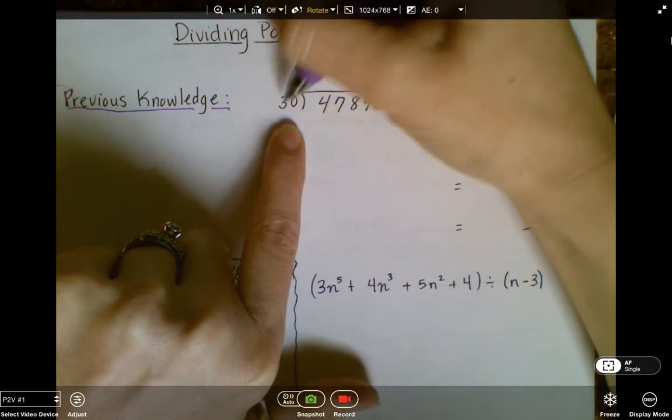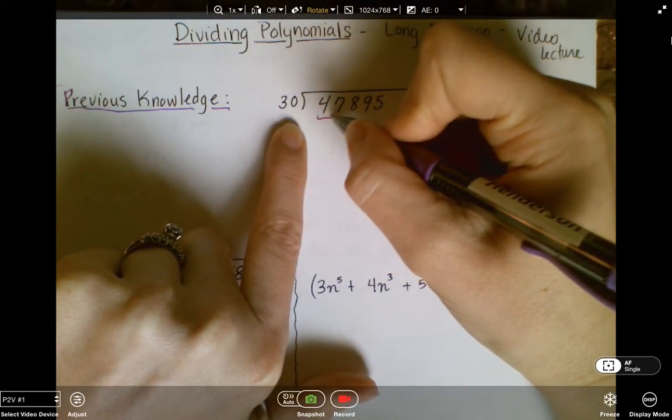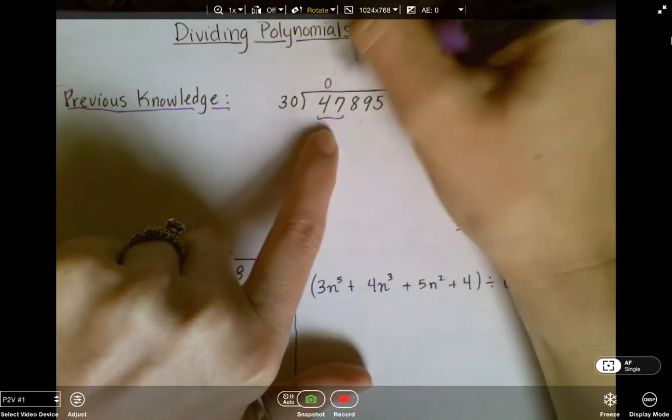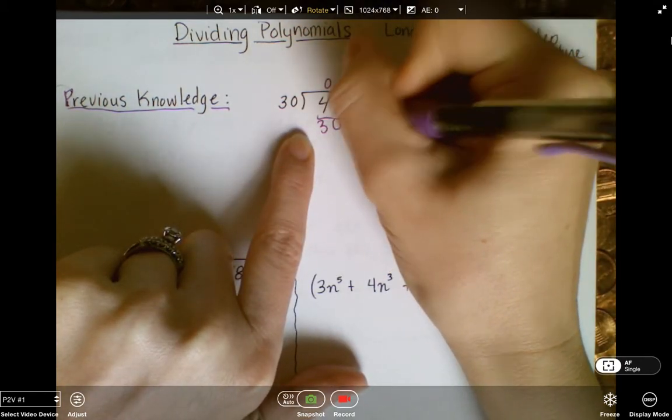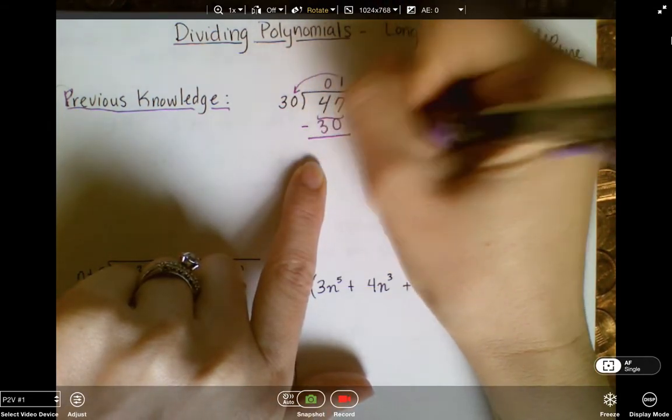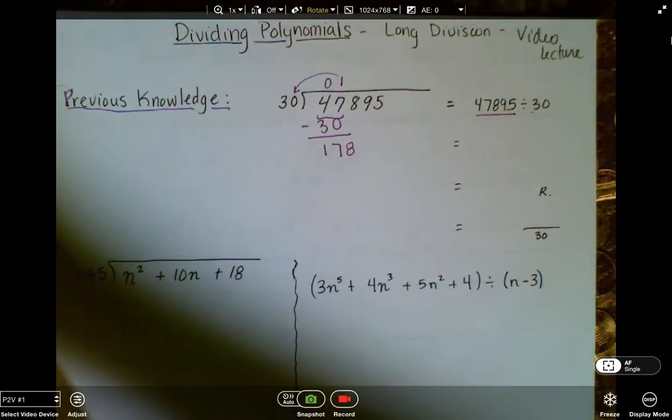So the first thing I'm going to do is take 30 and see how many times it goes into the first possible term. So here it goes into 4 zero times, and 47 once. And then 1 times 30 gives me 30, and then I subtract and I get 17. And it's quickly getting to be numbers that I don't want to deal with, which is great.